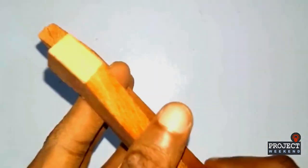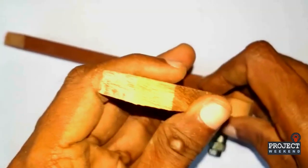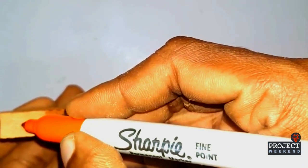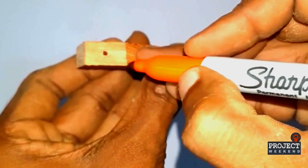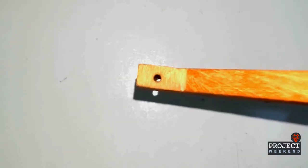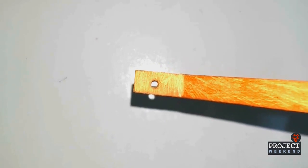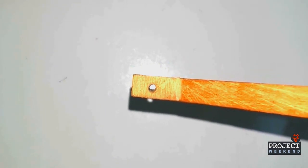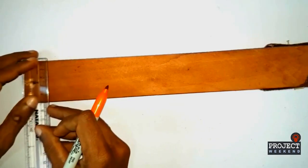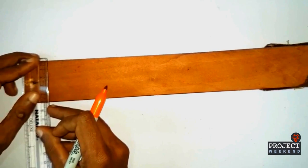Mark the center for mounting pen holder. Drill a hole for mounting pen holder. Get the next piece of wood and mark five by five centimeters square.